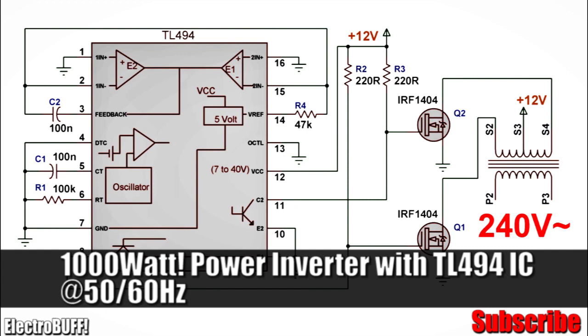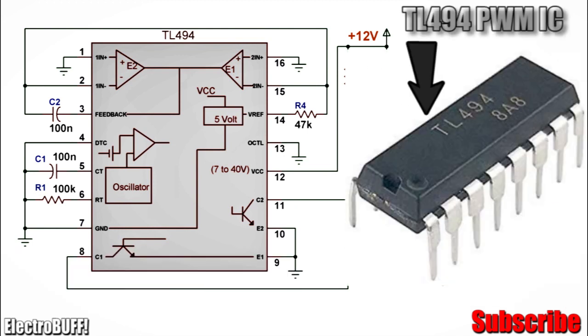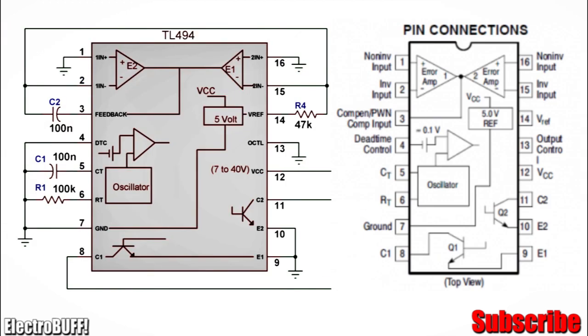The heart of the circuit is the TL494 Pulse Width Modulation IC, which is a very reliable IC for inverters and switch mode power supplies. It has 16 pins and the entire pinout and connections for the IC and the whole circuit are shown.